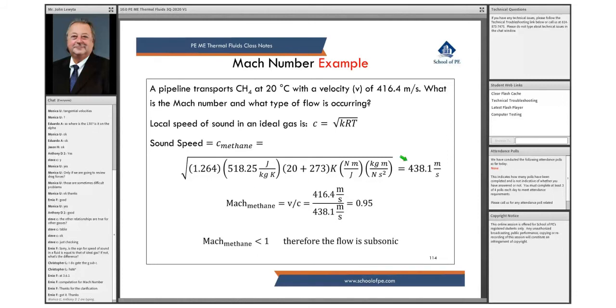We just calculated the local speed of methane is 438 meters per second. The velocity to get the Mach number, okay?